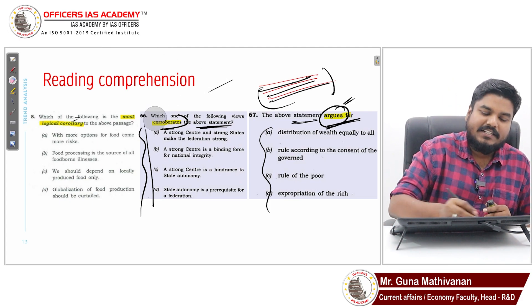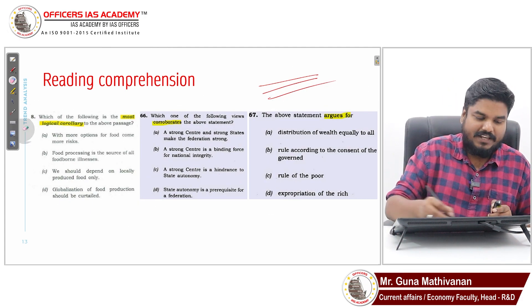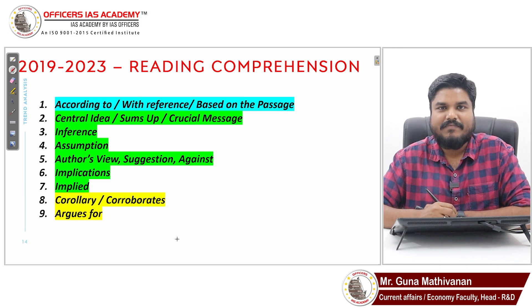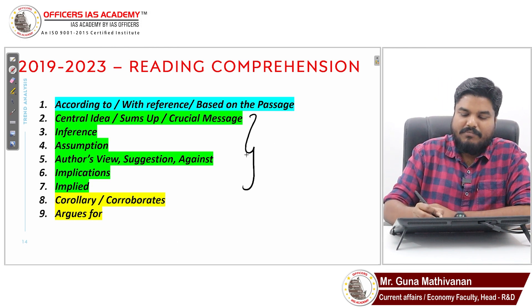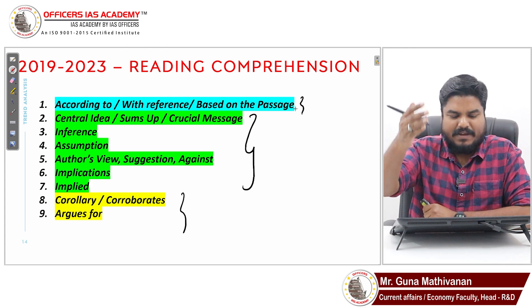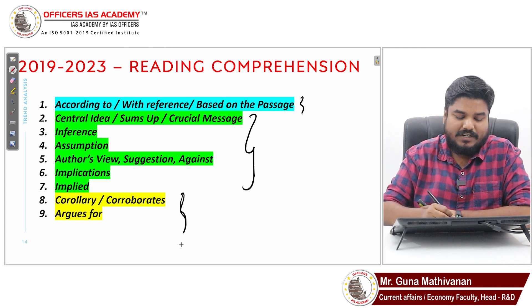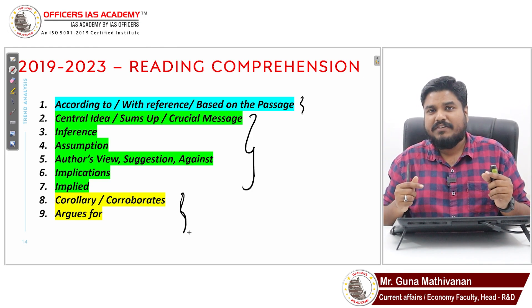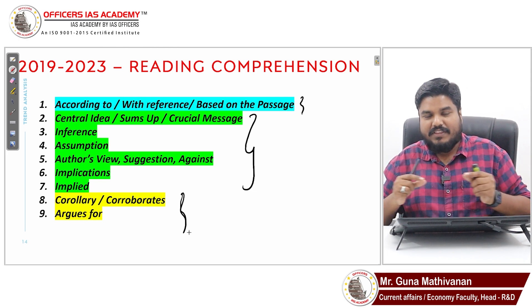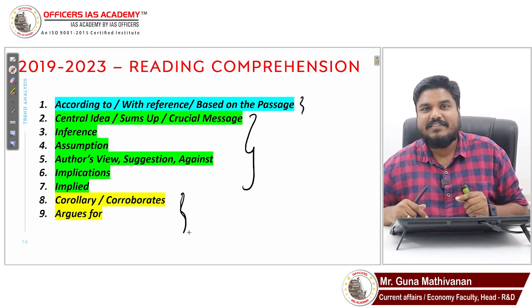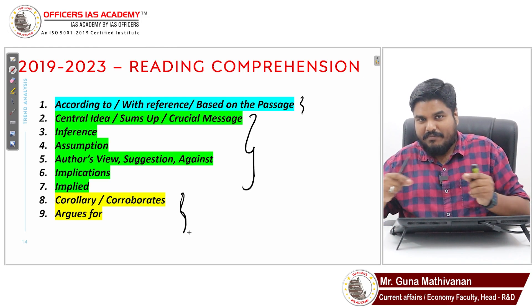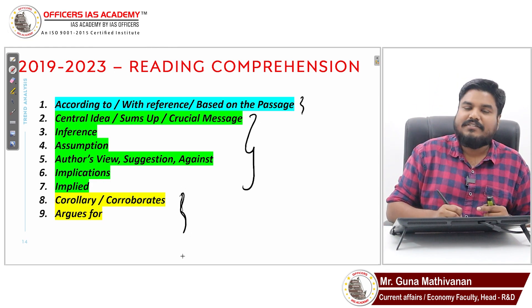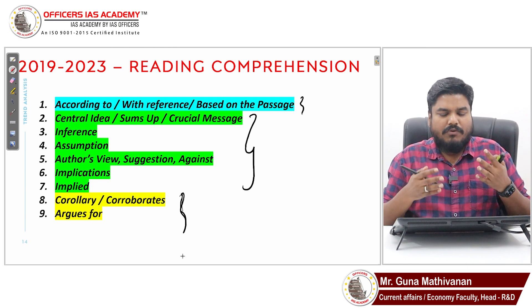So there are three categories of reading comprehension: first, questions answered directly from the passage; second, assumption or extension questions based on understanding; third, short two-to-three line statements with questions asking for a logical extension, supporting evidence, or what the statement argues for.